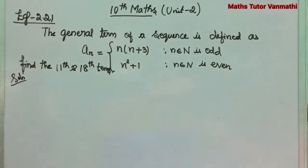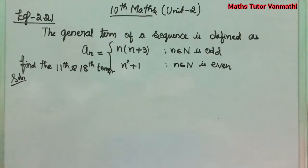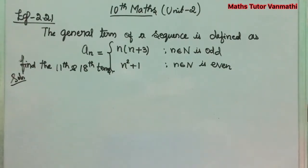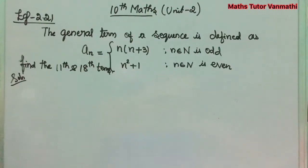Today in 10th maths we are going to see unit 2, example 2.21. The question is: the general term of a sequence is defined as a_n = n(n+3) where n belongs to natural numbers when n is odd, and a_n = n² + 1 when n is even. Find the 11th and 18th terms.